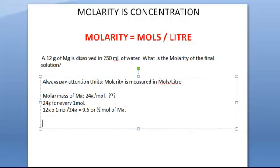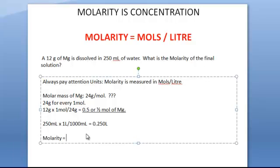Now let's move on to the next part of the question. We have 250 milliliters of water, but we have to convert milliliters to liters to get the right answer. One liter equals 1,000 milliliters, so your answer is 0.25 liters of water. Now plug and chug for molarity: you have 0.5 moles of magnesium divided by 0.250 liters, and that gives you a 2 molar solution. Very simple, very straightforward.